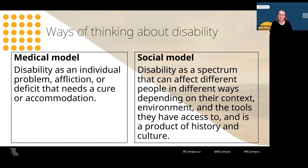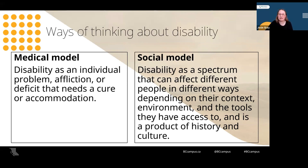A concept I find really helpful when thinking about the range of barriers that students face is the social model of disability and how it contrasts with the medical model of disability. These are not the only frameworks for understanding disability, but they provide helpful distinctions when considering how we can best support students in post-secondary environments. The medical model of disability understands disability as an individual problem, affliction, or deficit that needs a cure or accommodation. It sees disability as grounded in the individual. This is the model used in medical settings, and also at universities and colleges where students need to have a diagnosed disability to be eligible for accommodations.